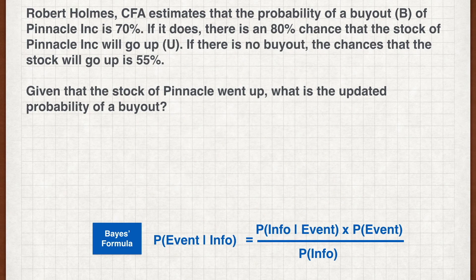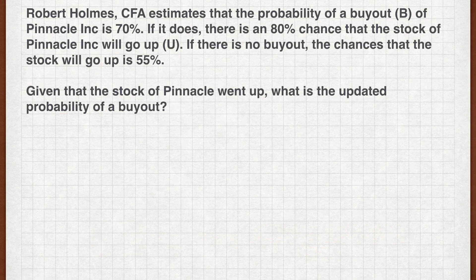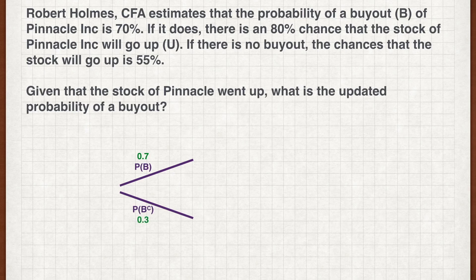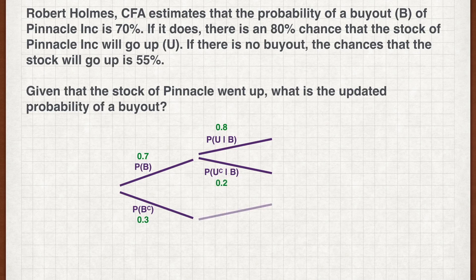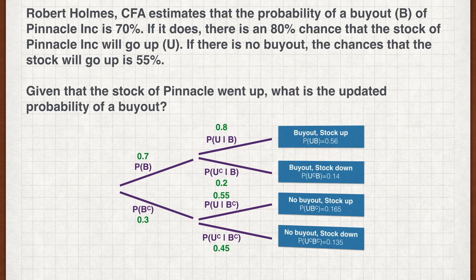And we're back. It's not necessary, but sometimes drawing a tree diagram can help in problems like this. We have the probability of a buyout given as 0.7, hence the probability of no buyout is 0.3. Also, the probability of the stock going up given a buyout is 0.8. Therefore, the probability of the stock going down given a buyout is 0.2. The probability of the stock going up given no buyout is 0.55, and the probability of the stock going down given no buyout is therefore 0.45. We can compute the joint probabilities of the various combinations using the multiplication rule.